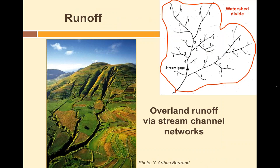Looking at the runoff piece: a watershed has a surface water channel and tributary network. Stream channels are ordered — when two first-order streams come together, you get a second-order stream; when two second-orders come together, you get a third-order, and so on using the Strahler ordering system. If you map the lengths of all those streams, first-order and second-order streams are about three-quarters of the total stream channel network — those are our headwaters, and they're very important.